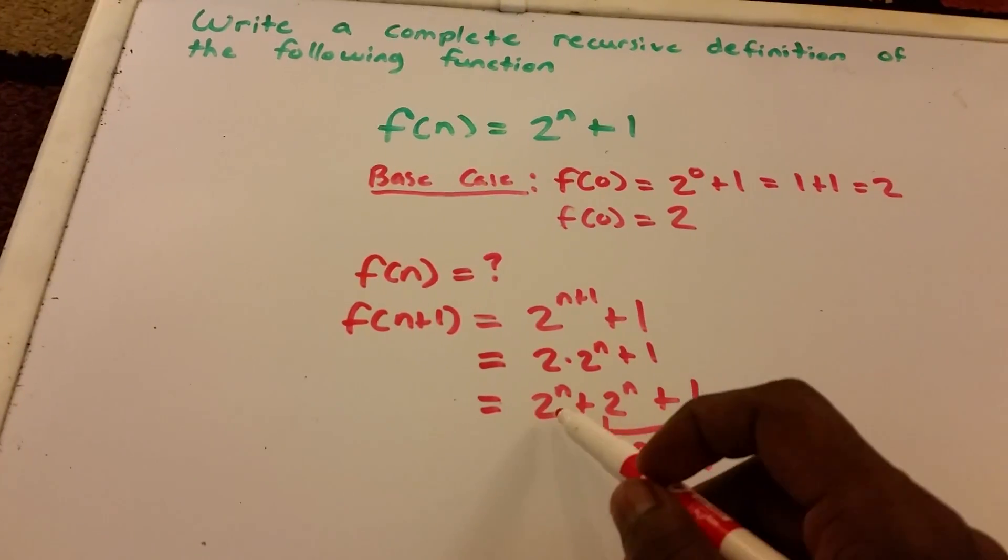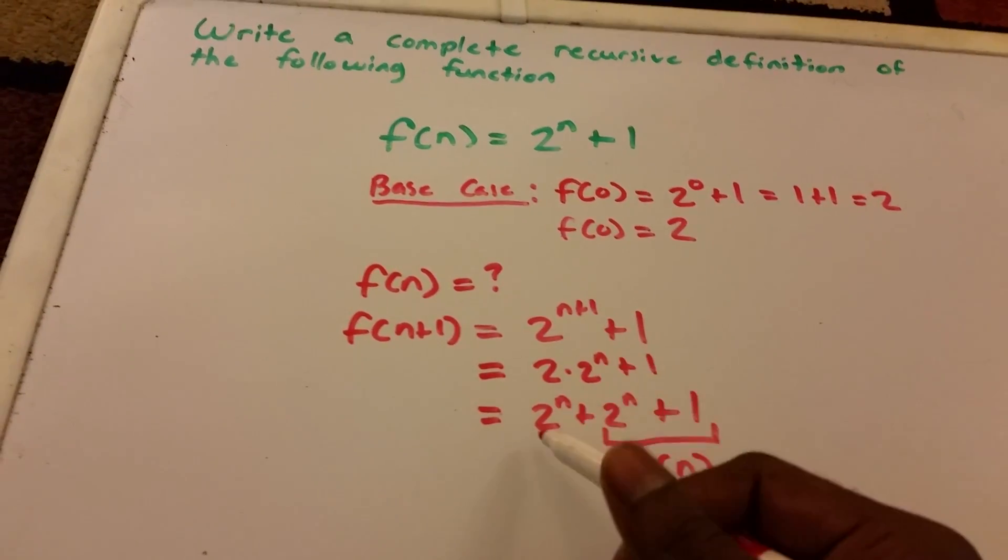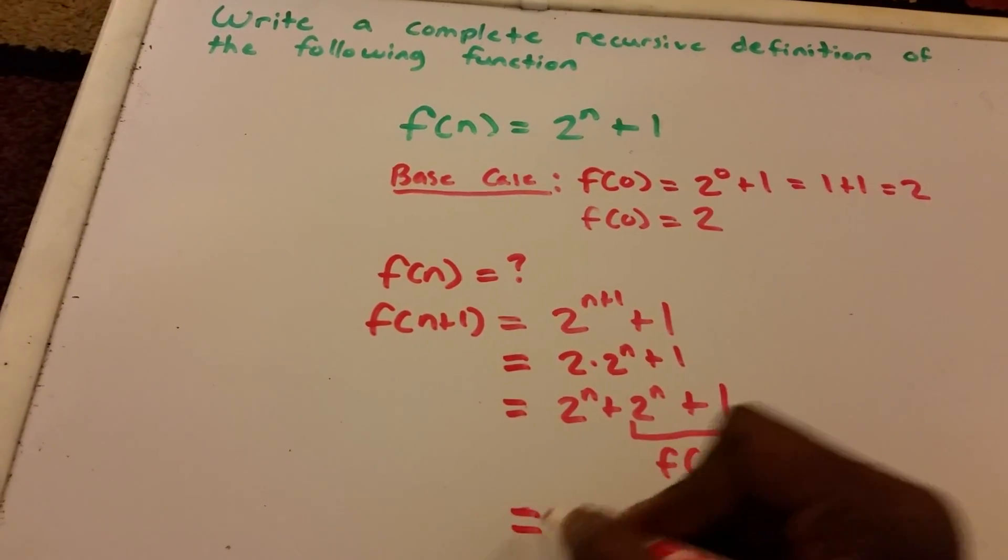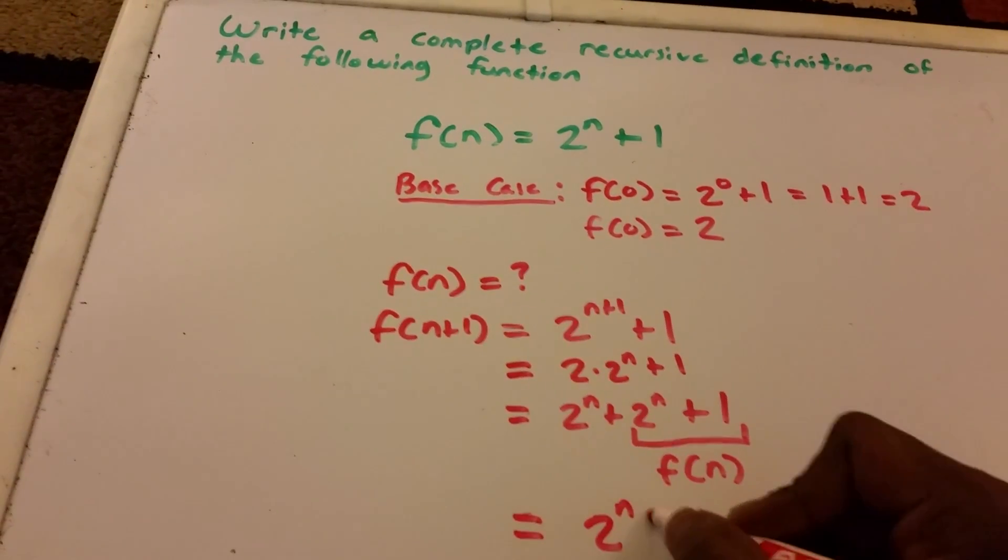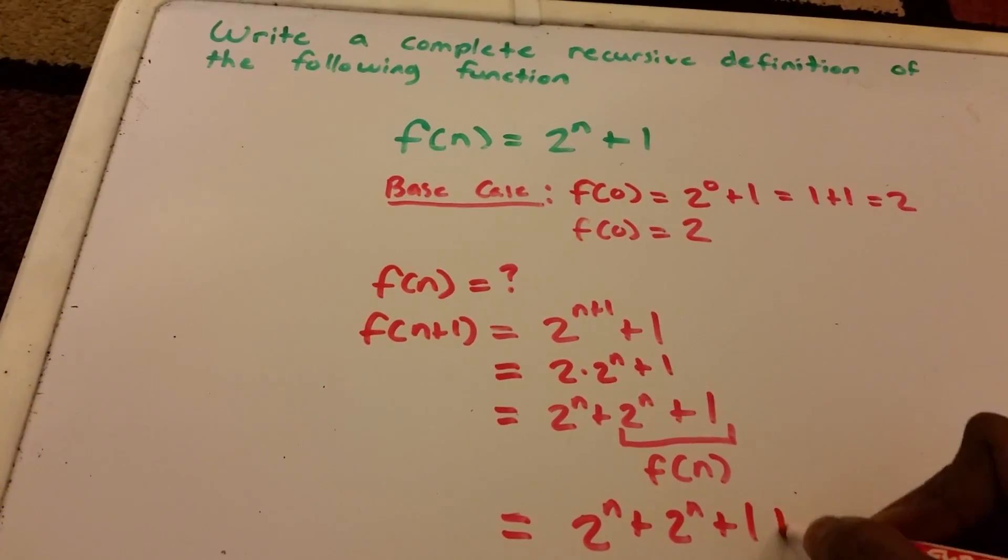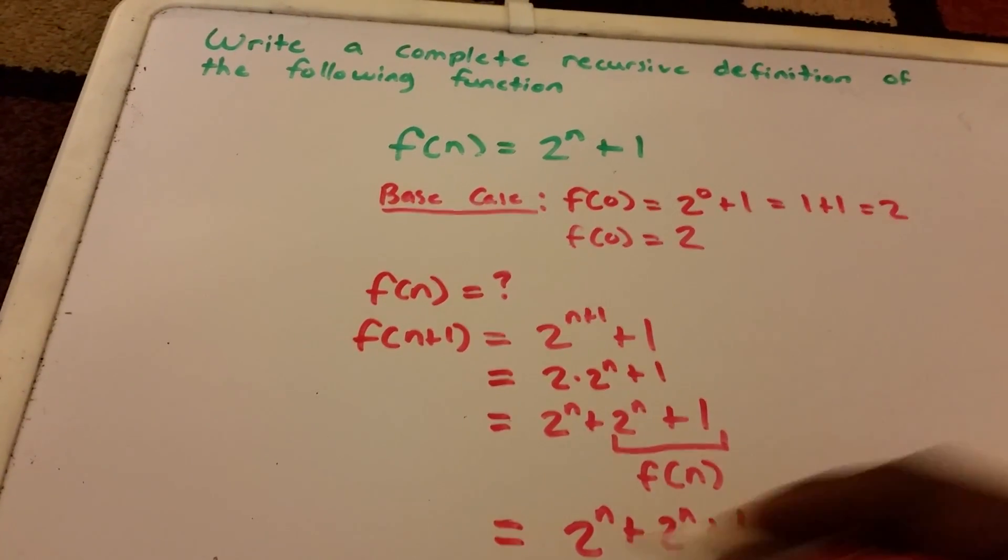Right, so that's good. So we need to try to get this right here. Maybe we can make this a function of n, and we can do that by doing 2^n + 2^n + 1 + 0. This is still equal.